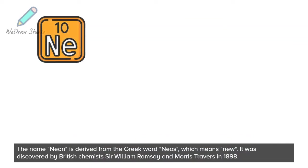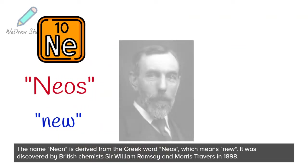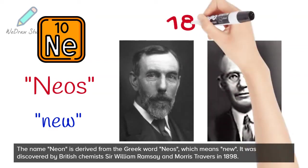The name neon is derived from the Greek word neos, which means new. It was discovered by British chemists Sir William Ramsey and Morris Travers in 1898.